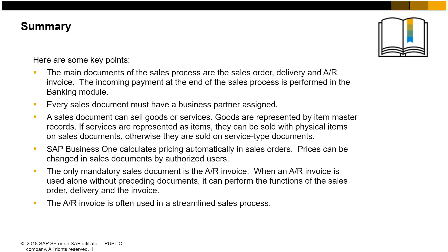The main documents of the sales process are the sales order, delivery, and AR invoice. The incoming payment at the end of the sales process is performed in the banking module. Every sales document must have a business partner assigned. A sales document can sell goods or services — goods are represented by item master. If services are represented as items, they can be sold with physical items on sales documents; otherwise they are sold on service type sales documents.